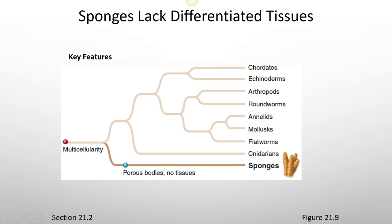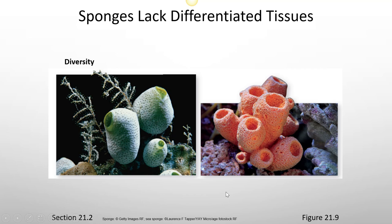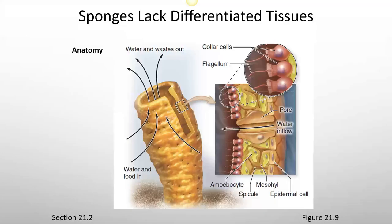Key features of sponges are that they have porous bodies with no tissues. Sponges lack differentiated tissues and there is a wide diversity of sponges. As far as anatomy goes, water and wastes go in and out the same end.